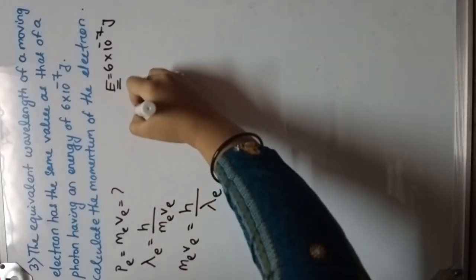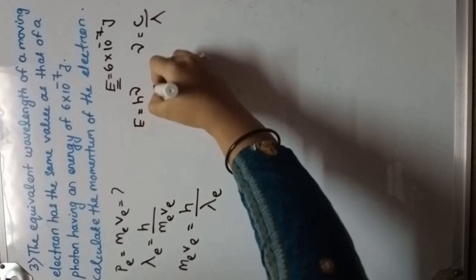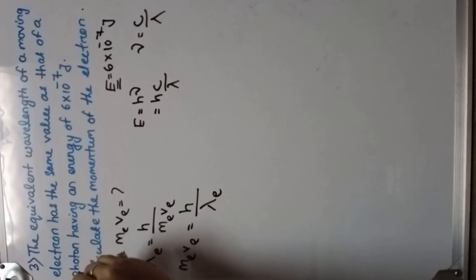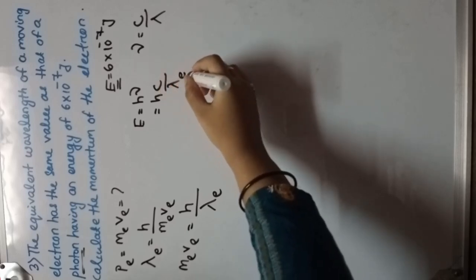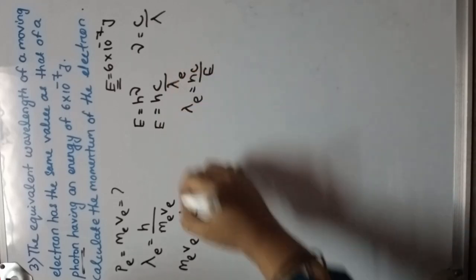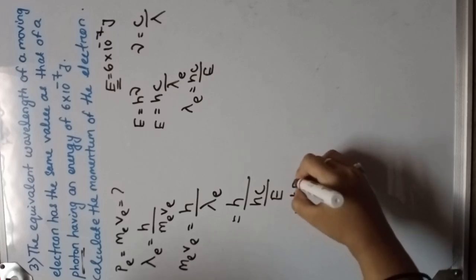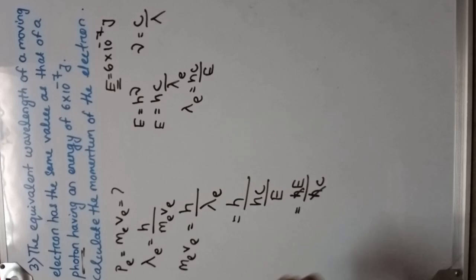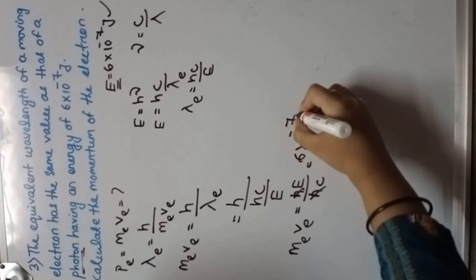We know that E equals to h nu, and nu equals to c by lambda, so E equals to hc by lambda, which gives lambda equals to hc by E. Since the electron wavelength equals the photon wavelength, lambda_e equals to hc by E. The momentum of the electron m_e v_e equals to h by lambda_e equals to h divided by hc by E, which simplifies to E by c. Putting the value E equals to 6 into 10 to the power minus 7 joule divided by c equals to 3 into 10 to the power 8 meter per second.